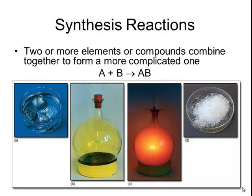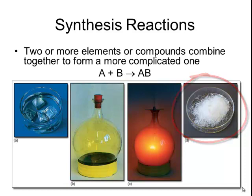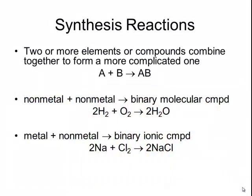When I take the sodium metal and the chlorine gas and combine them together in the same flask, there's a violent reaction that releases heat and light, and the end result is a white crystalline solid that we call sodium chloride. This is an example of a synthesis reaction in which a metal and a non-metal combine together to make a binary ionic compound.